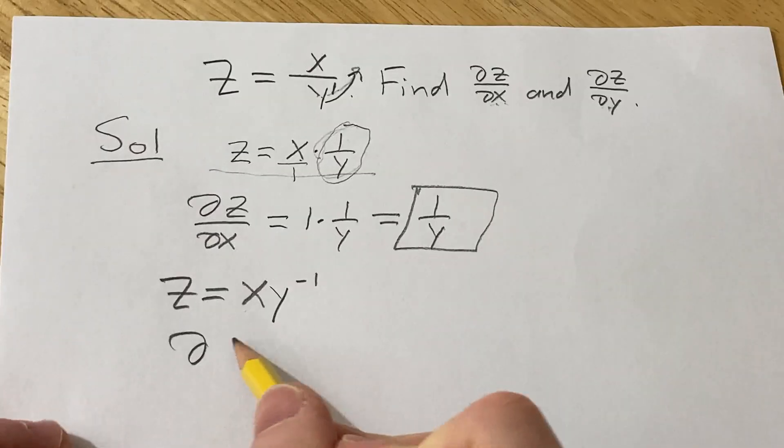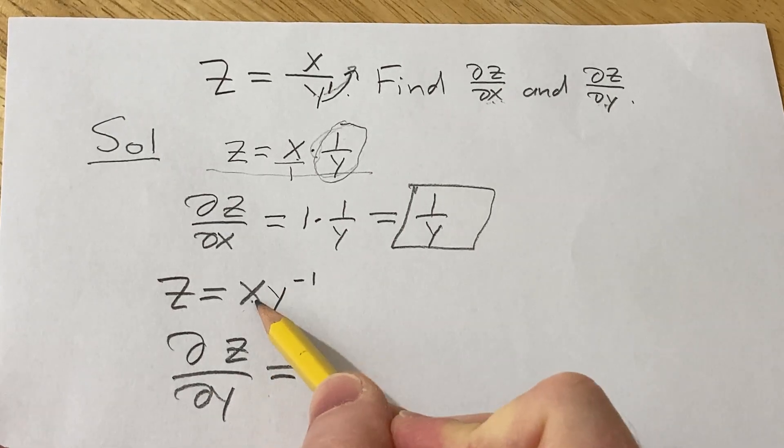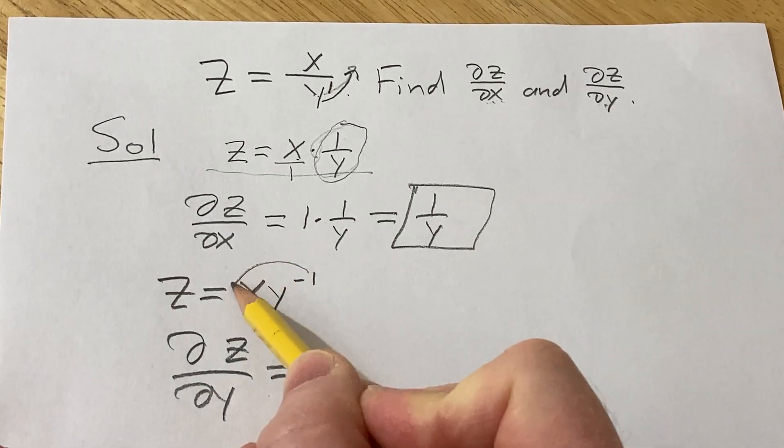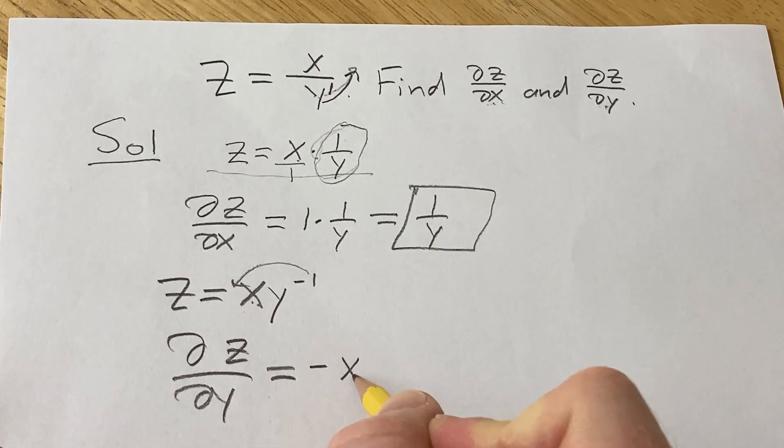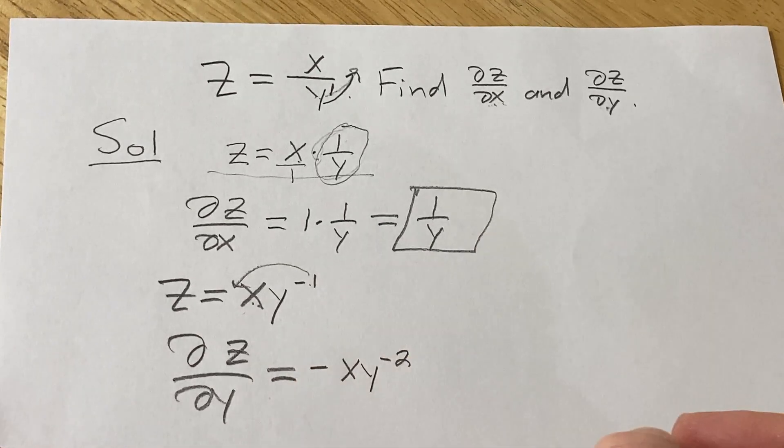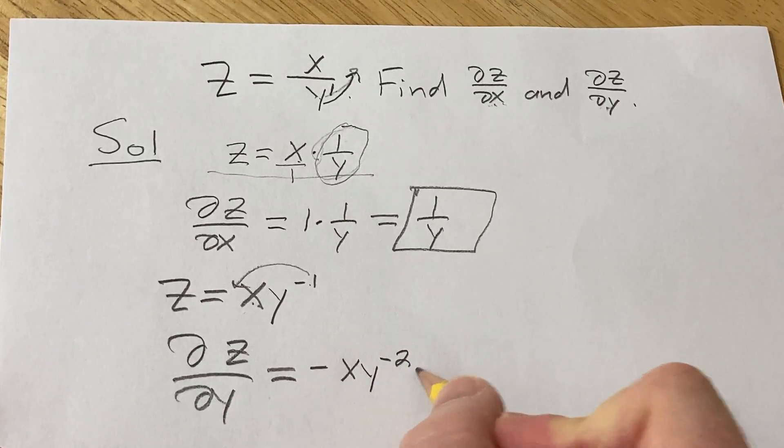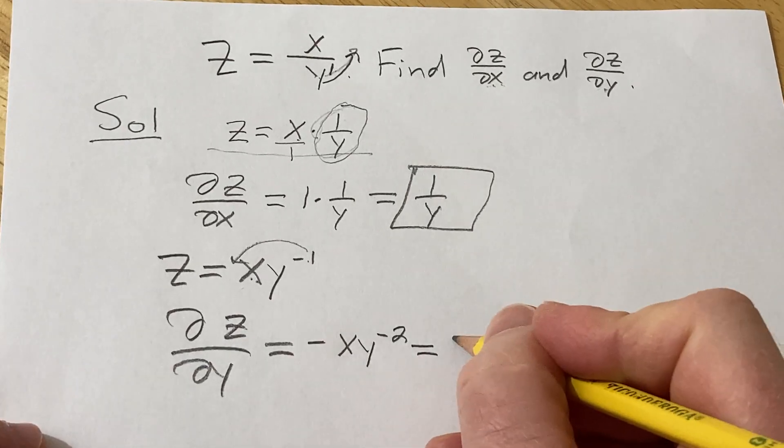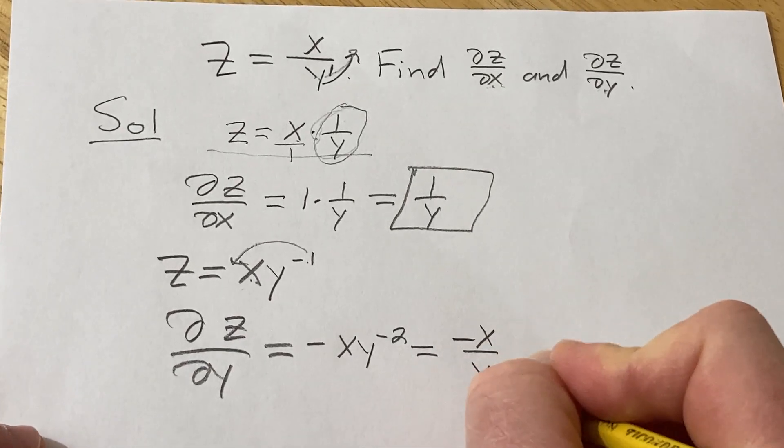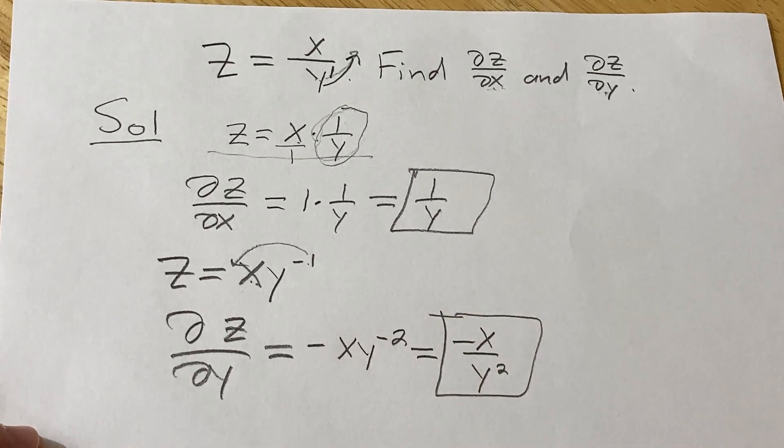So del z del y, the x is a constant, so it hangs out. So you put the negative 1 in the front, so negative x. And then you subtract 1 from the exponent, so negative 2. It might be beneficial to write this in a better way. Maybe we can bring this one back downstairs and write this as negative x over y squared. And so that would be the partial of z with respect to y.